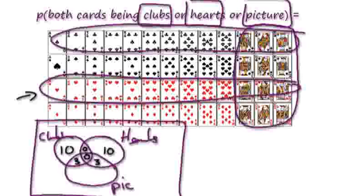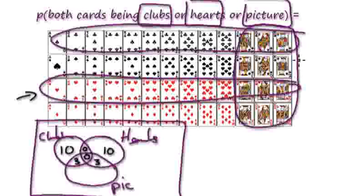Picture cards — there are 12 picture cards. Three are in the clubs overlap, three are in the hearts overlap. So that's six accounted for, which leaves six in the picture-only region.